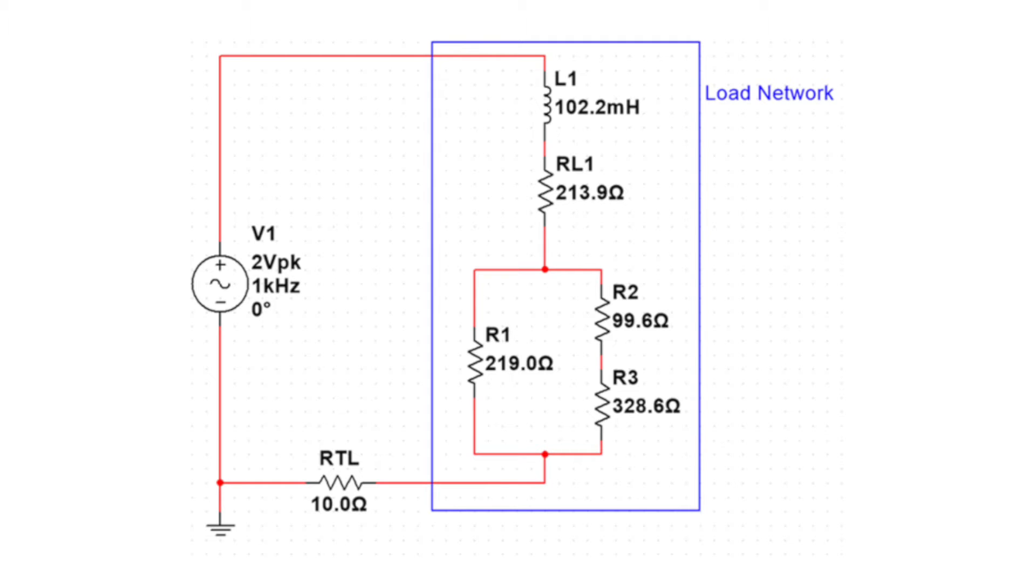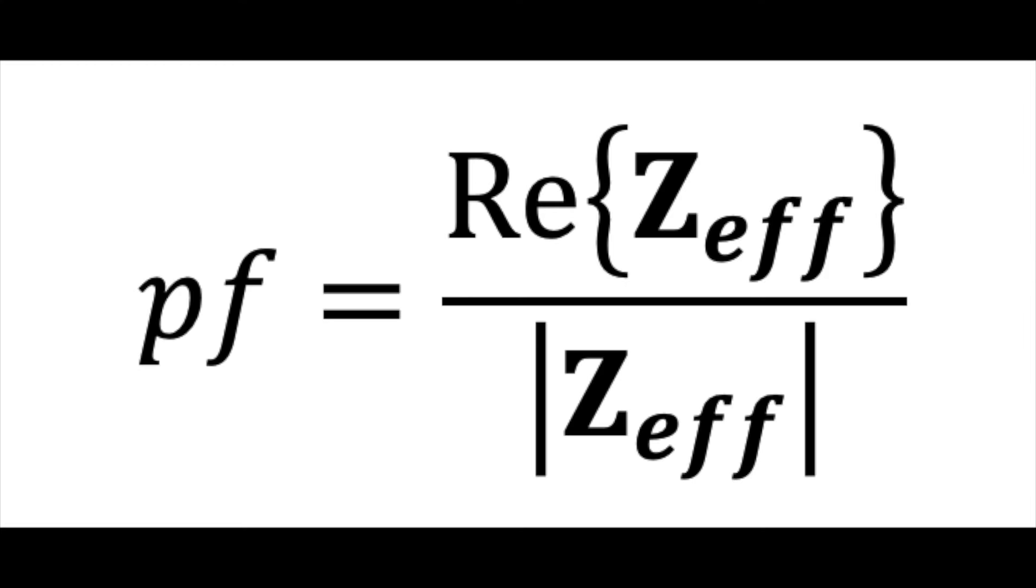If we first want to find the power factor of the circuit, we can recall that the power factor of any circuit is the real component of the total impedance of the circuit divided by the magnitude of the same impedance.